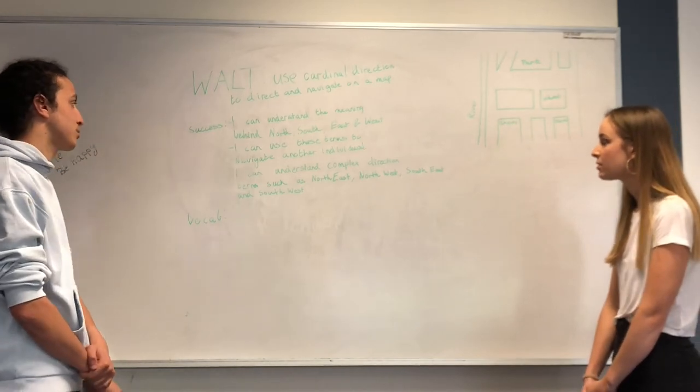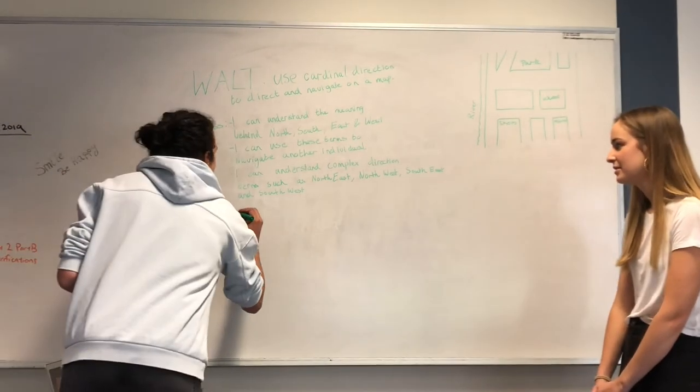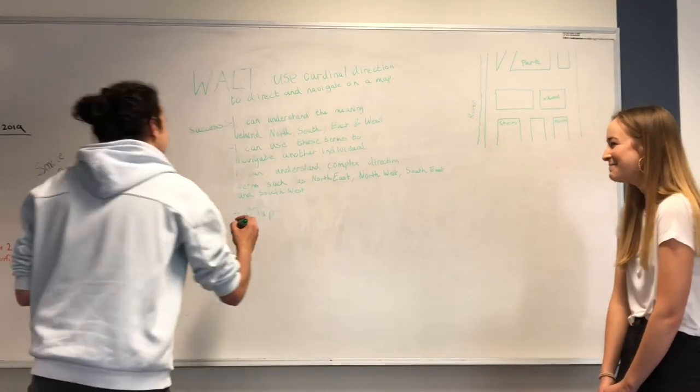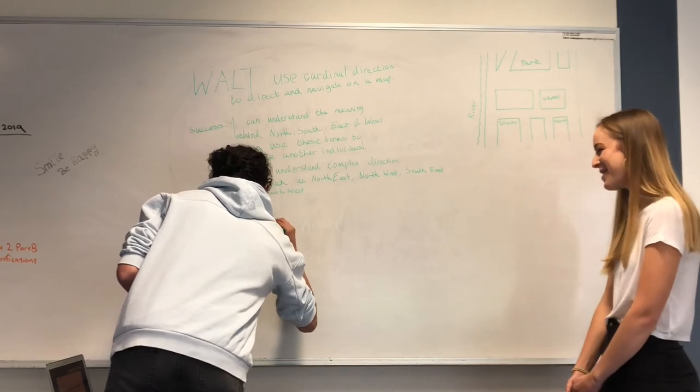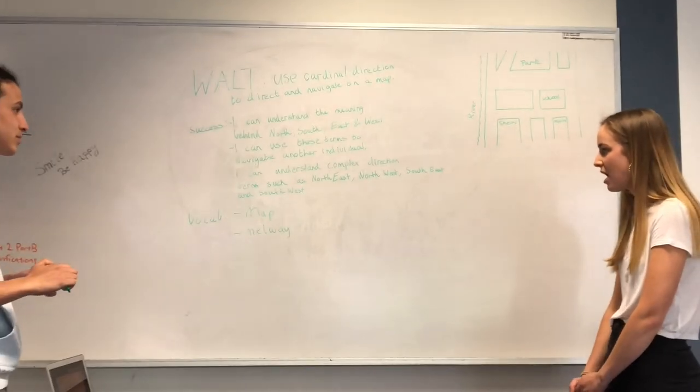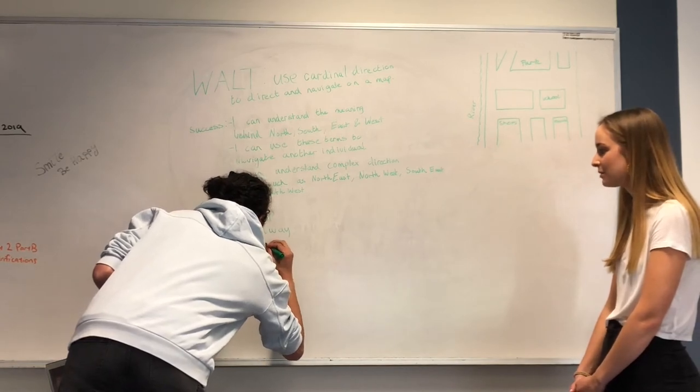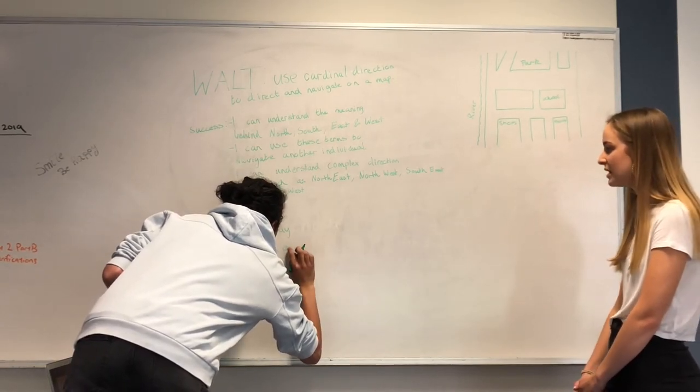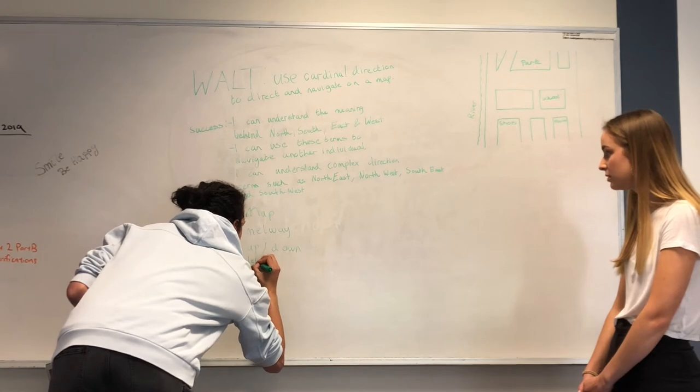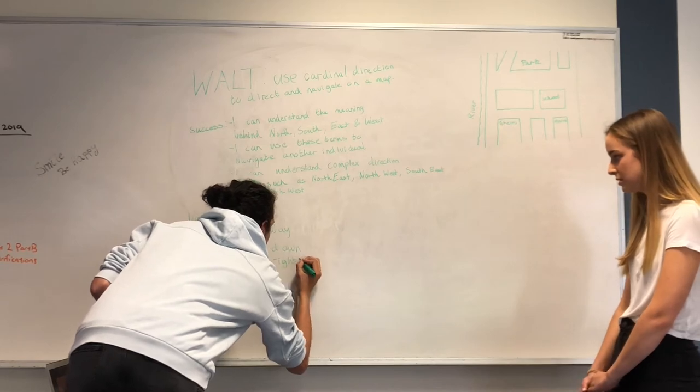So when we talk about cardinal direction, what kind of vocab words come to mind? Map. Melway. What about something towards the direction? Up and down. Left and right.